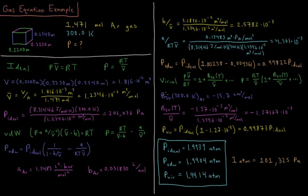If I look up in a table, the 2nd virial coefficient of argon at 300 Kelvin equals minus 15.7 centimeters cubed per mole, or milliliters per mole. A centimeter cubed is 10 to the minus 6th meters cubed, so when I convert that, I get minus 1.57 times 10 to the minus 5th meters cubed per mole.